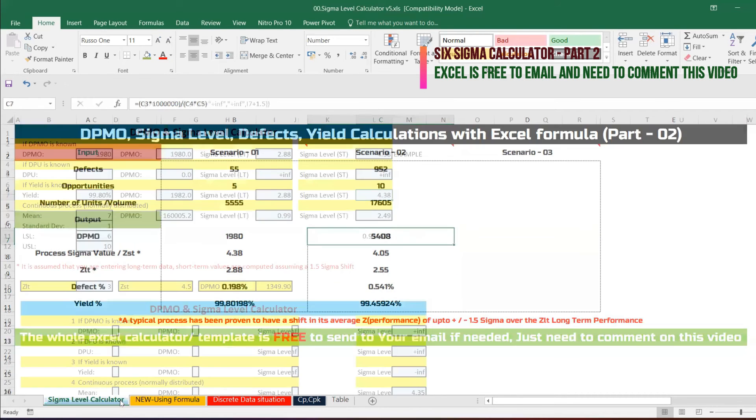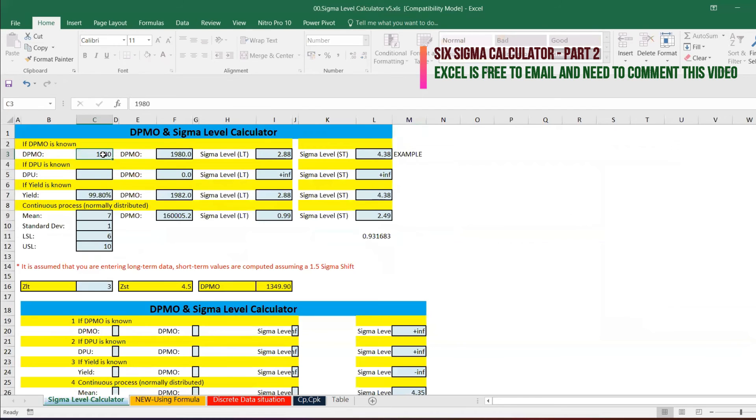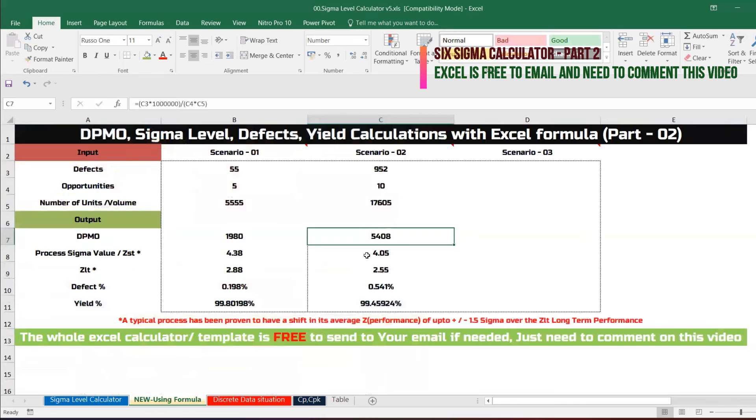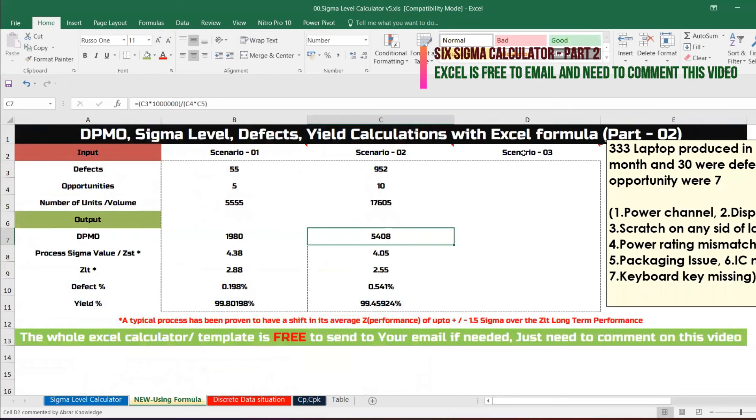5408, 4.5 is the short term one, so exactly we got the same value. Let's do third scenario together.